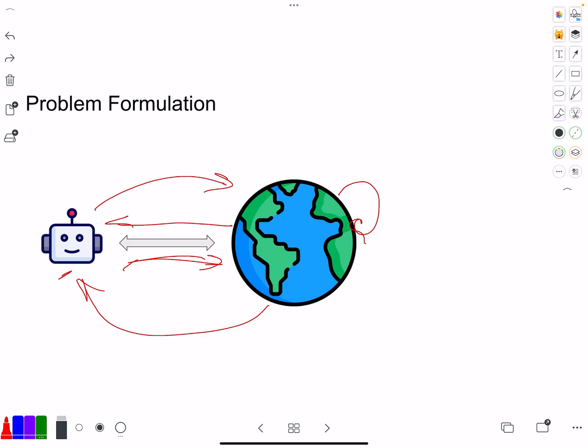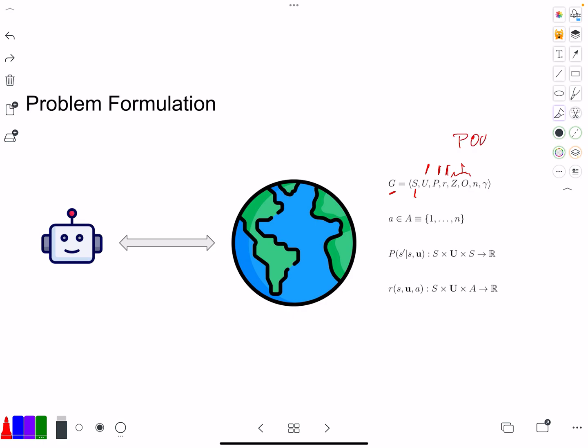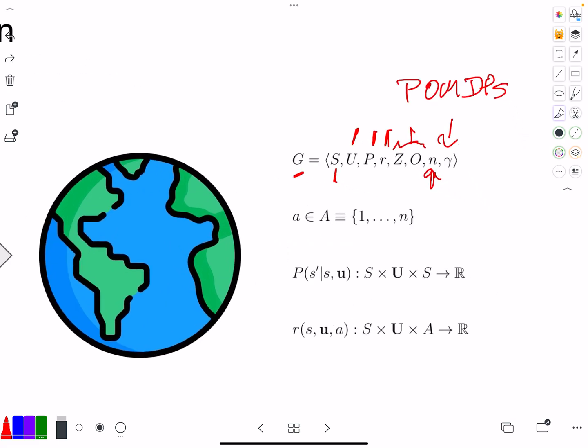This is the single agent view. In the multi-agent case, we go from the MDP to stochastic games. This G over here is now a state, action U, set of actions. Then we have the transition function P, the reward function, emission probability, and the observation space. This is related to POMDPs. N is the number of agents, and gamma is the discount factor.